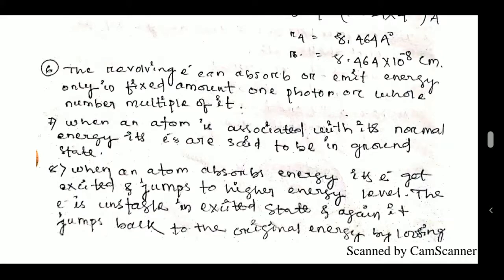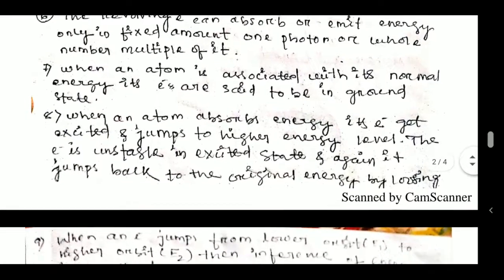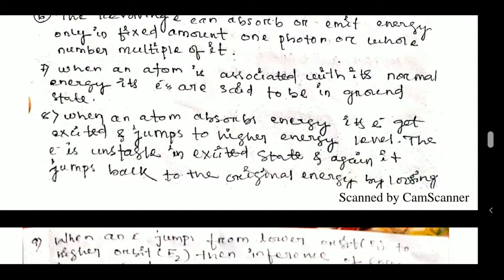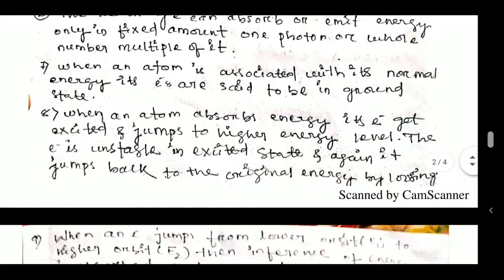When in the ground state, the electron never jumps to a higher energy level unless it accepts a photon. When an atom absorbs energy, its electrons get excited and jump to a higher energy level. In the excited state, the electron is unstable, and it jumps back to its original energy level by losing energy — emitting energy as it returns from the outer energy level back to the inner energy level.